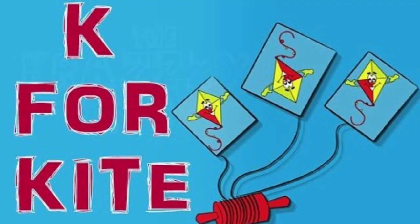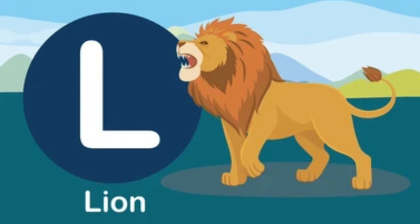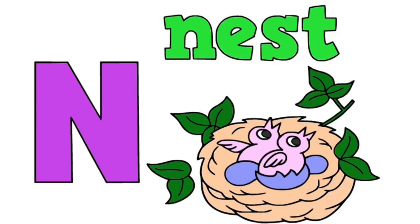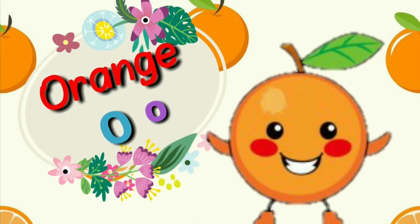K for Kite. Kite. L for Lion. Lion. M for Monkey. Monkey. N for Nest. Nest. O for Orange. Orange.